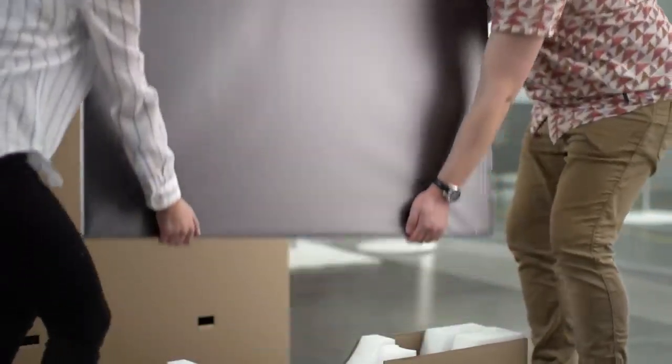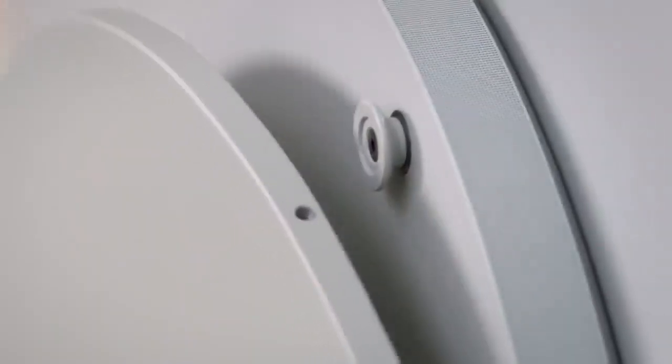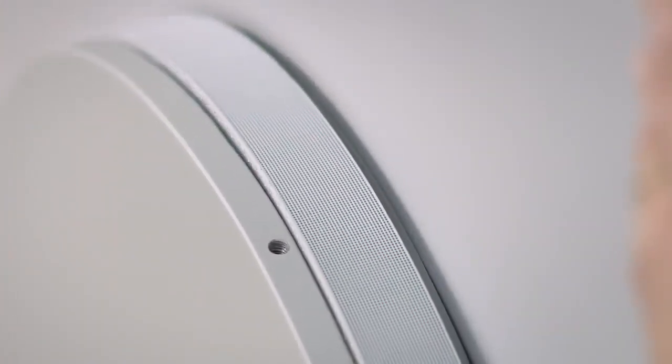With the help of your colleague, lift the Surface Hub from its box, supporting it with both hands. Align the hardware mounts with the slots on the mounting plate until it sits firmly in place.